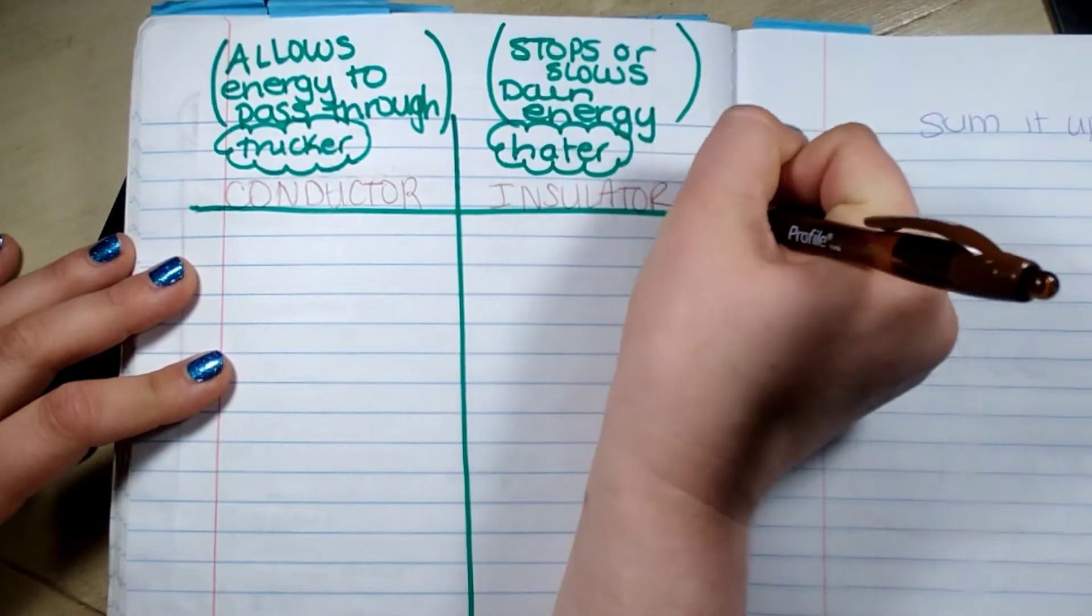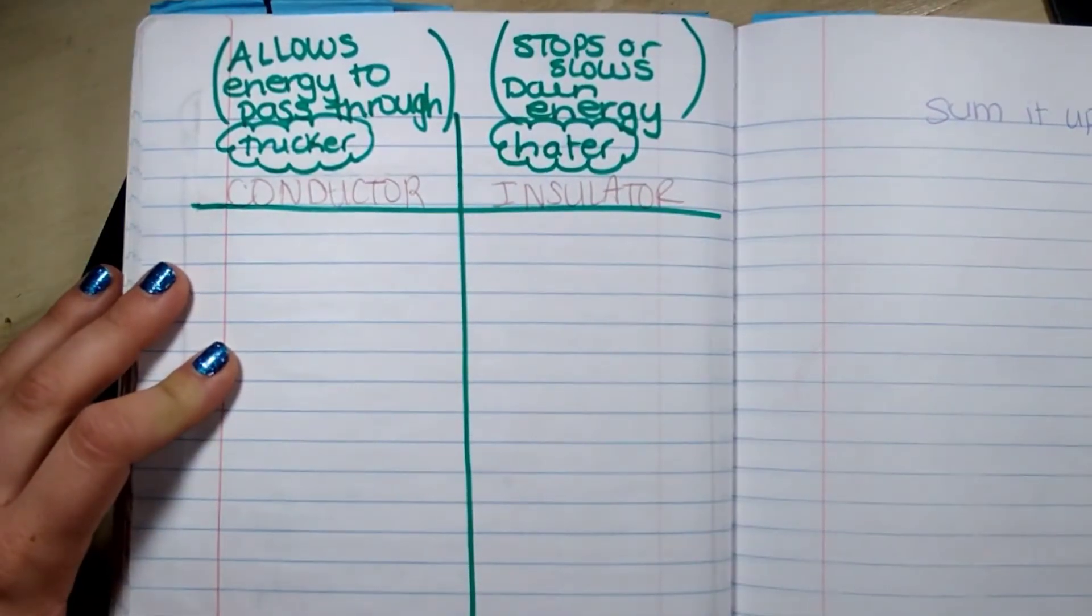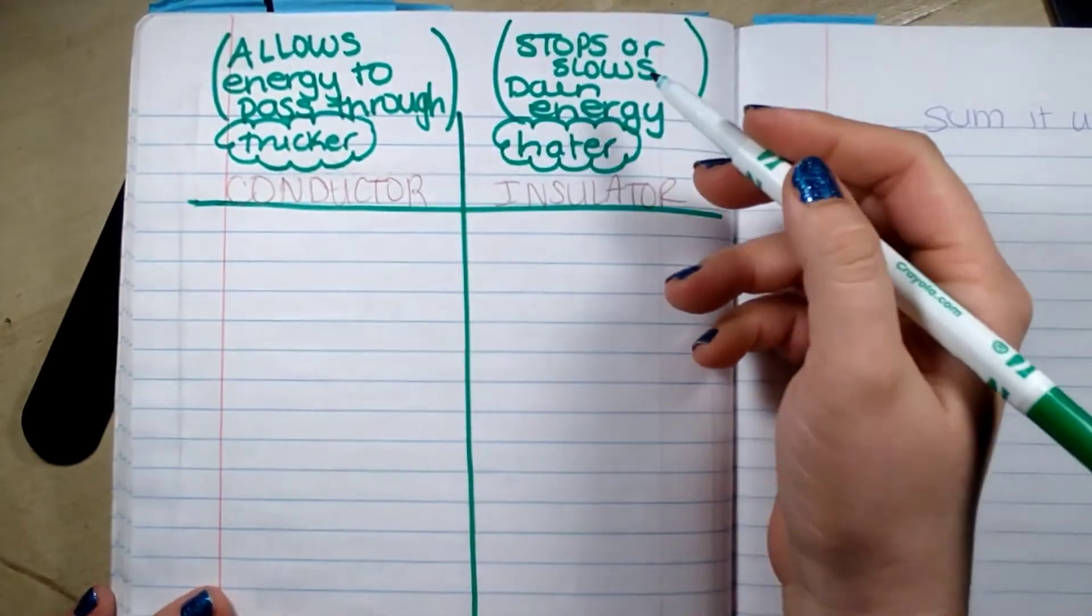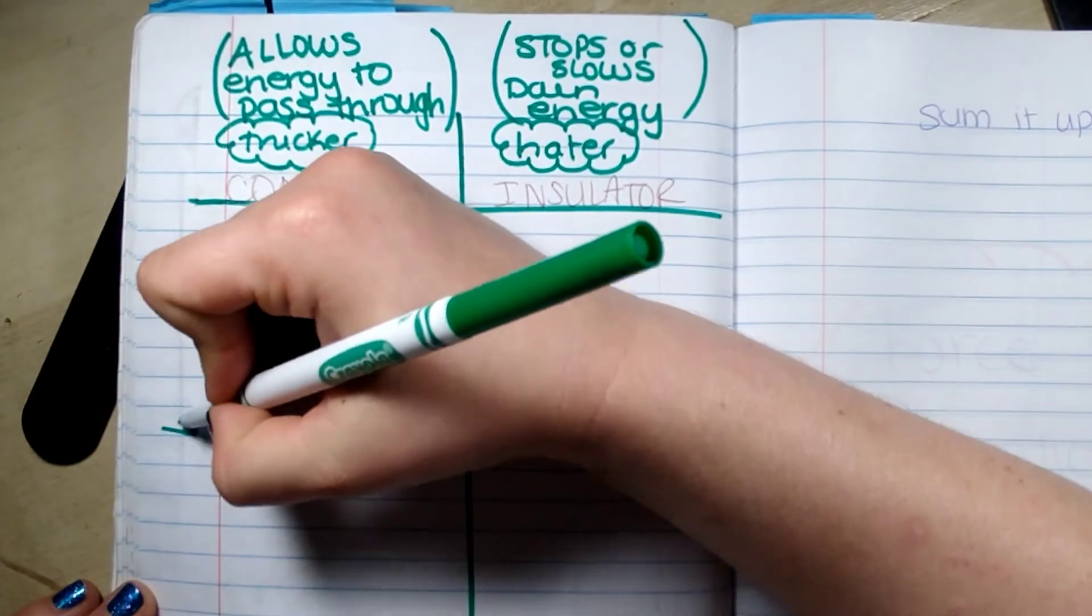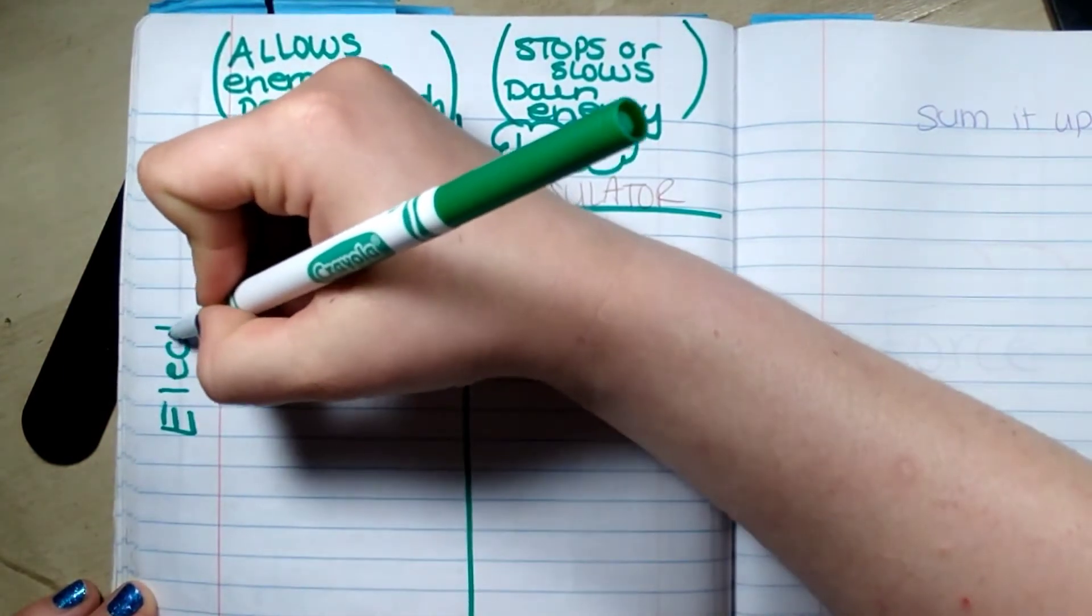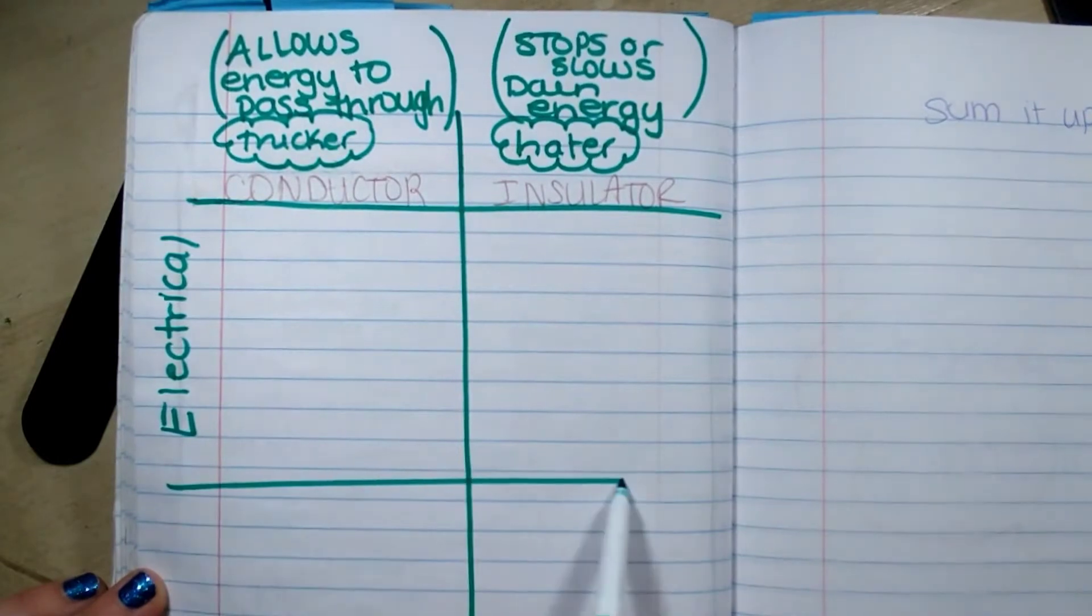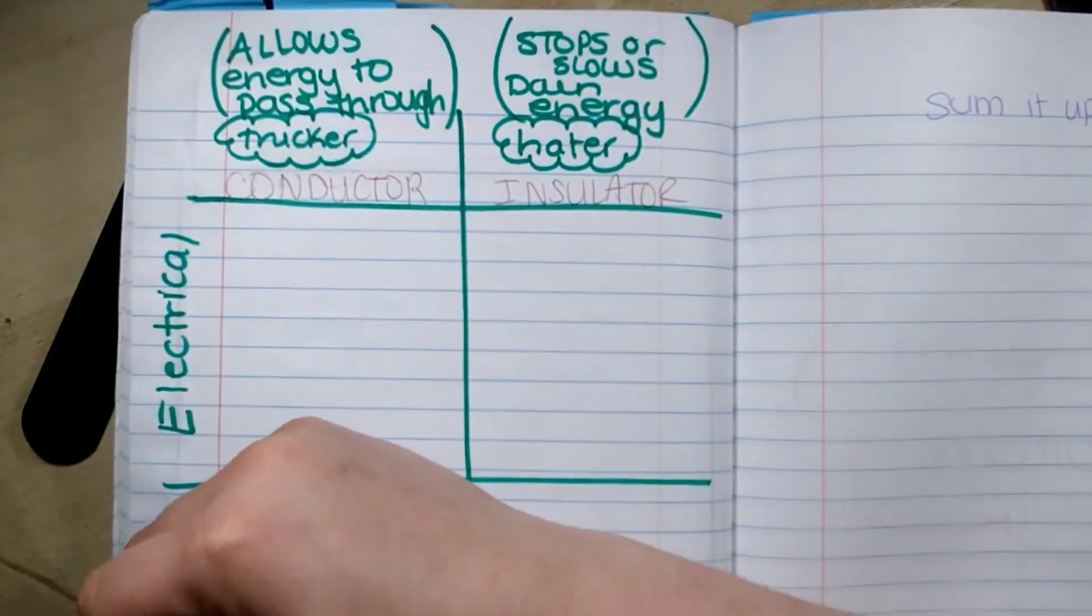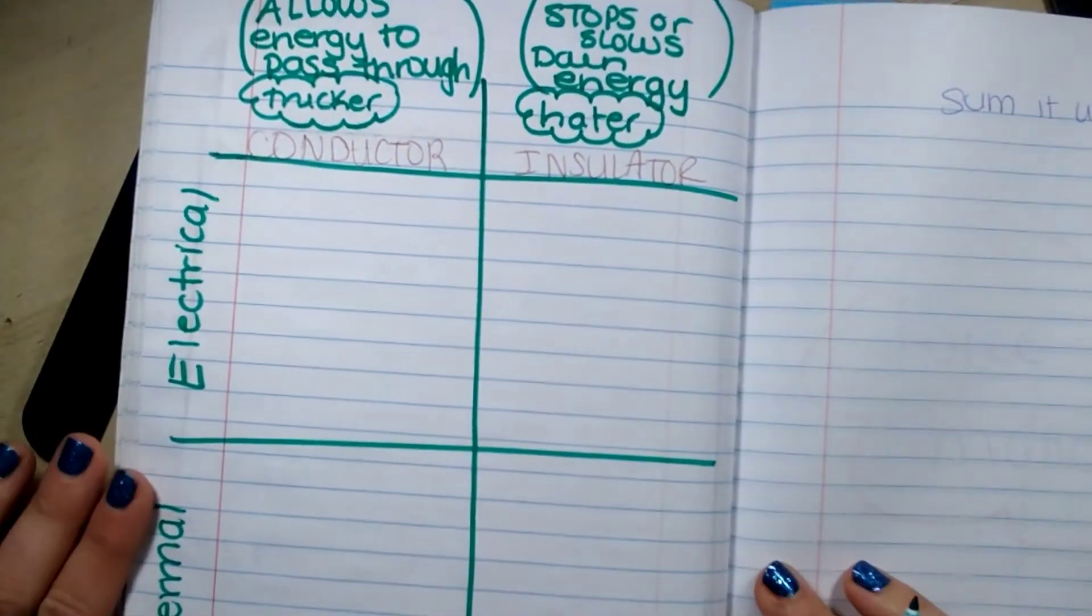So when I'm talking about letting energy through, it's also letting electrons flow through or electrons not flowing through. So I'm going to divide this. I'm going to put this as electrical. We're going to be talking about electrical energy. And then we're also going to be talking about thermal on the bottom, connecting it to what we've learned already.